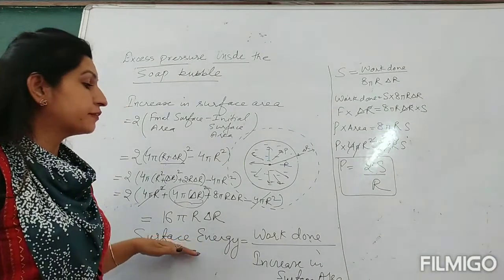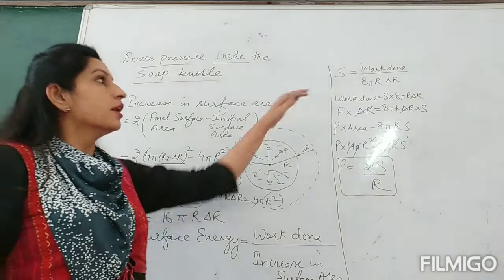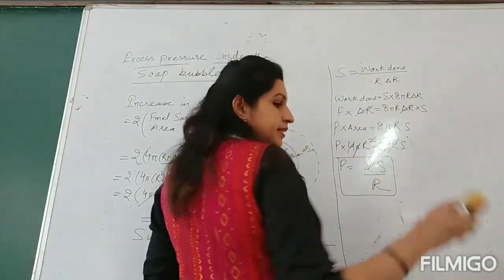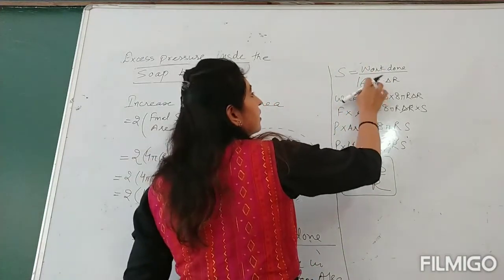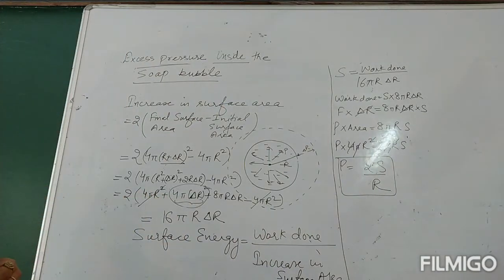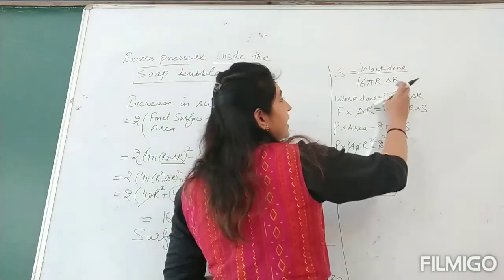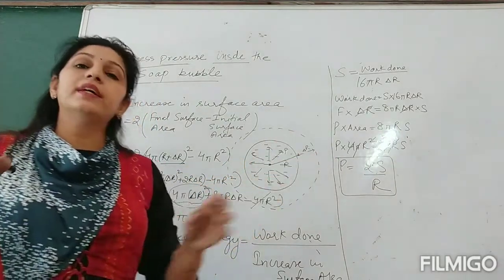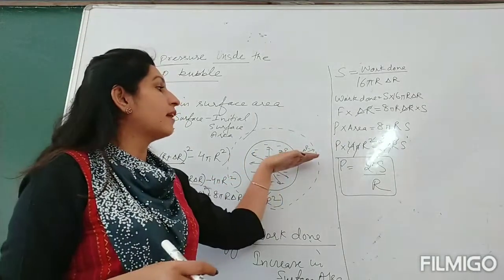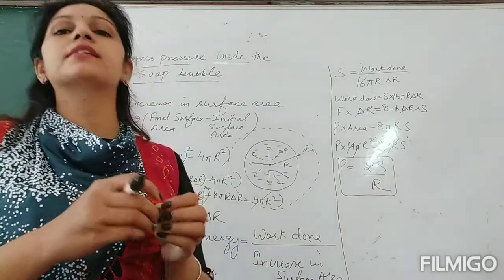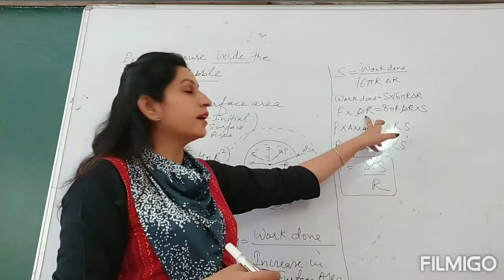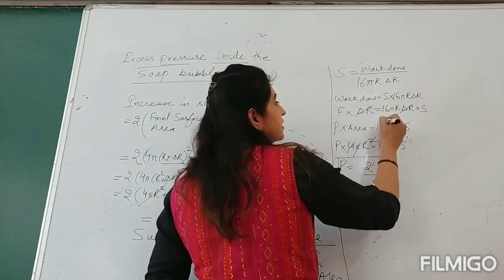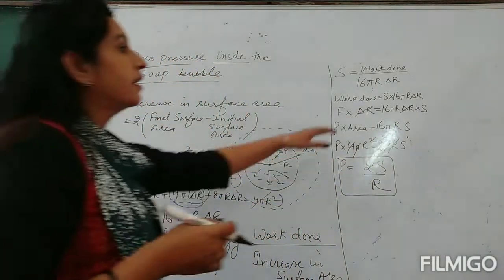Again we write: surface energy equals work done over increase in surface area. Here the increase in surface area is 16πR·δr instead of 8πR·δr. Work done equals S × 16πR·δr. Work done is again force times distance. Although the soap bubble has 2 free surfaces, the distance traveled is only delta r for both surfaces. So: F × δr = S × 16πR·δr, and delta r cancels.